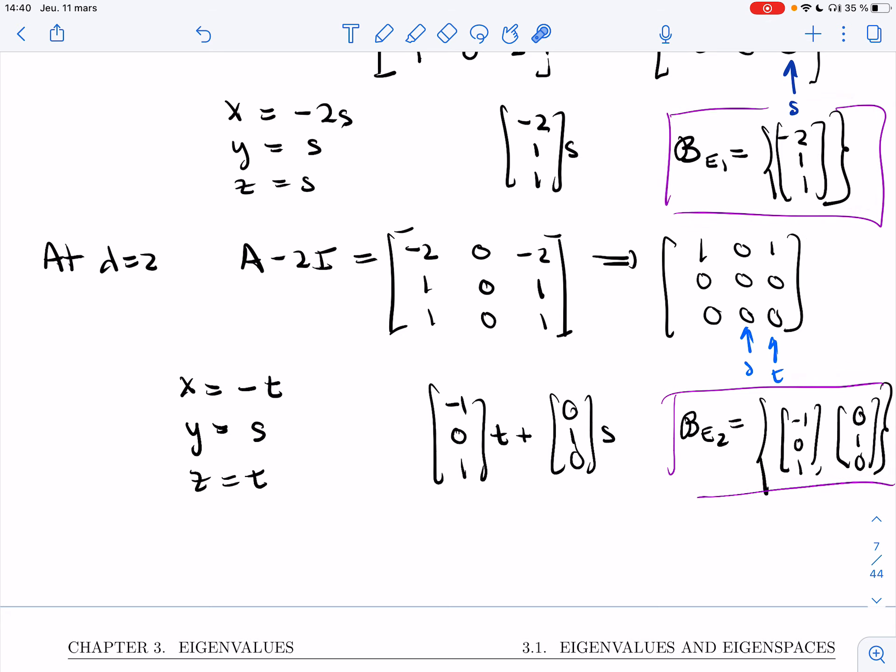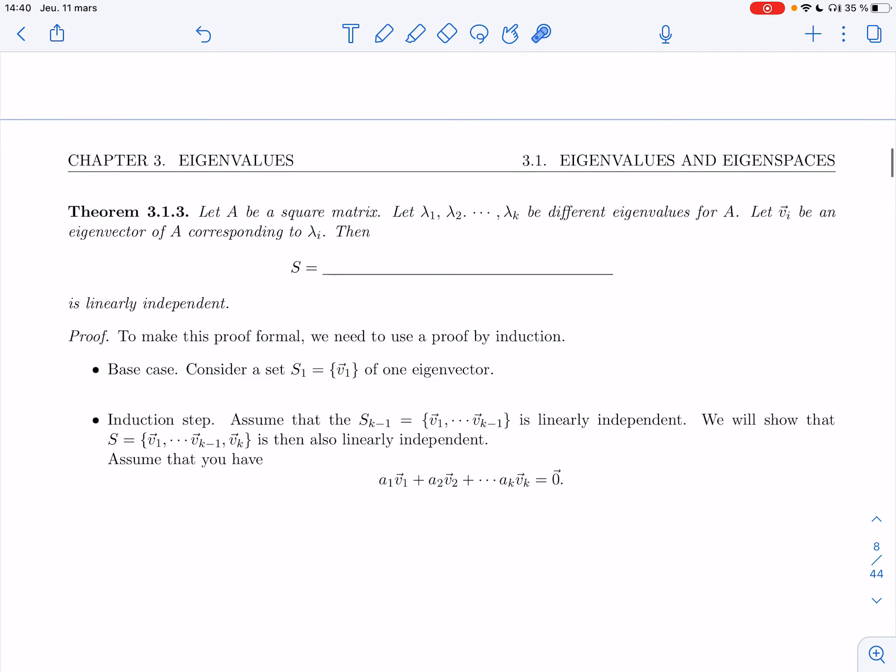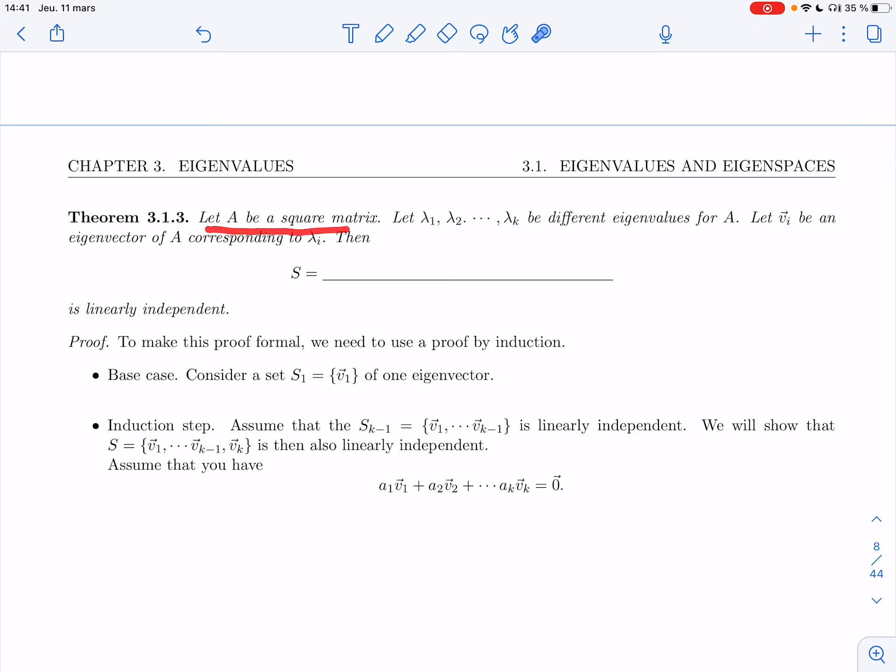Right, so we'll start with a baby version of this. Let A be a square matrix, and assume that lambda_1, lambda_2, through lambda_k are different eigenvalues for A, and I'm going to assume that v_i is an eigenvector for lambda_i. Then if I place all these v_i's together in a set,